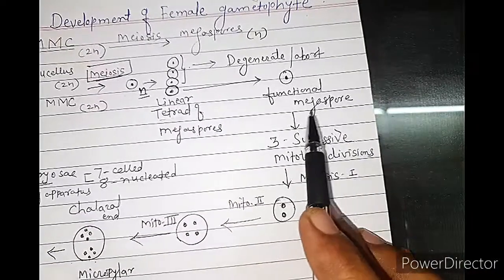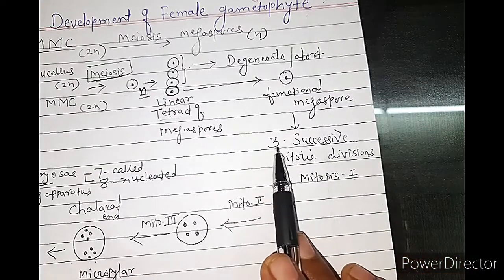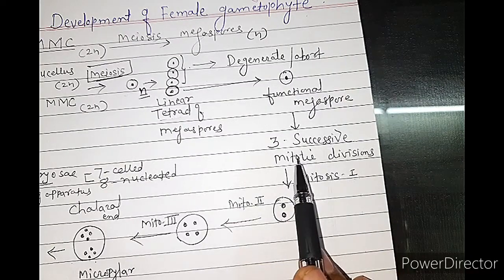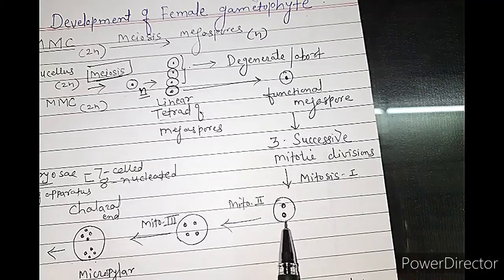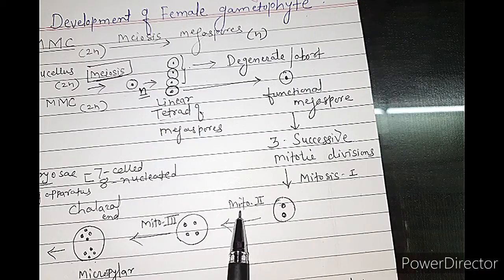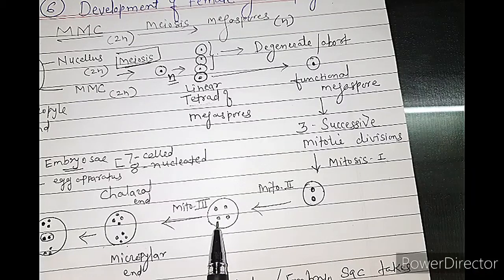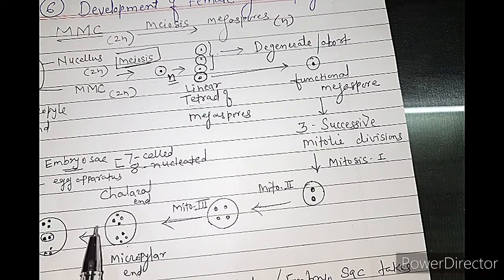The nucleus of this functional megaspore undergoes 3 successive nuclear mitotic divisions. First mitosis: 1 nucleus divides into 2. Second mitosis: the 2 nuclei divide to form 4 nuclei. Third mitosis: the 4 nuclei again divide to form an 8-nucleated megaspore.